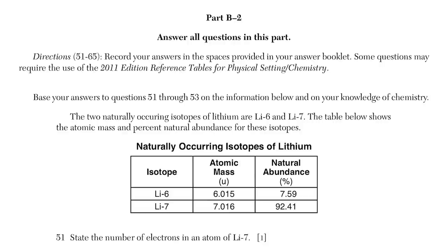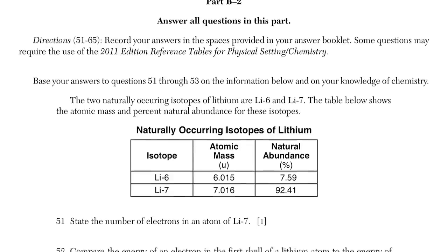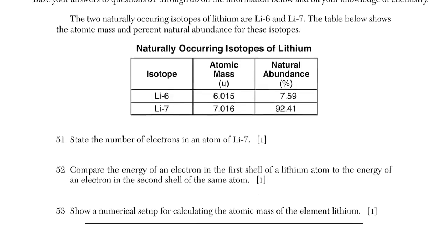Let's begin our review of Part B2 and Part C of this June 2022 Regents Chemistry exam. Let's start in order with the first question of this part, which says: state the number of electrons in an atom of lithium-7. Lithium-7 has a number after it.